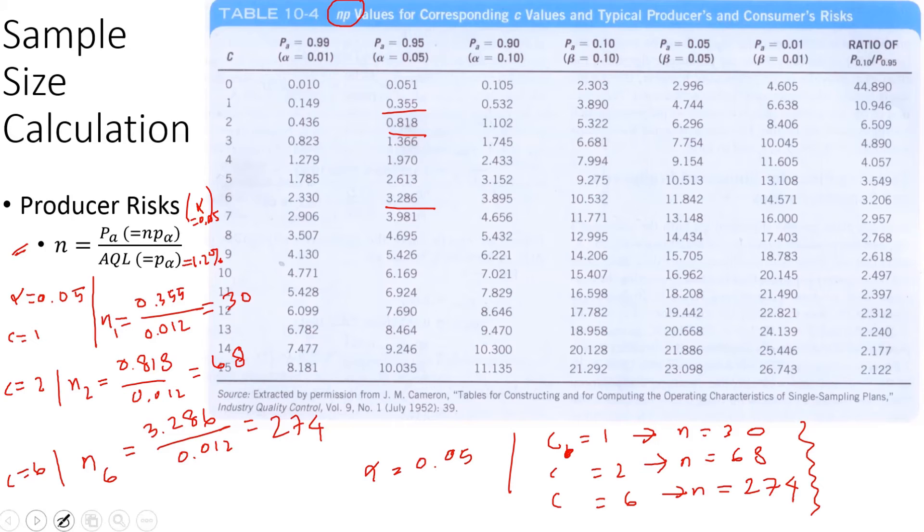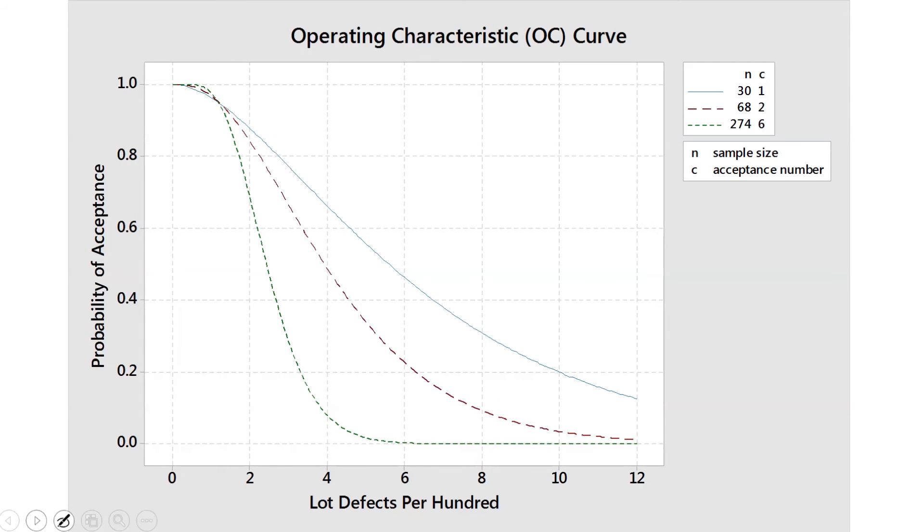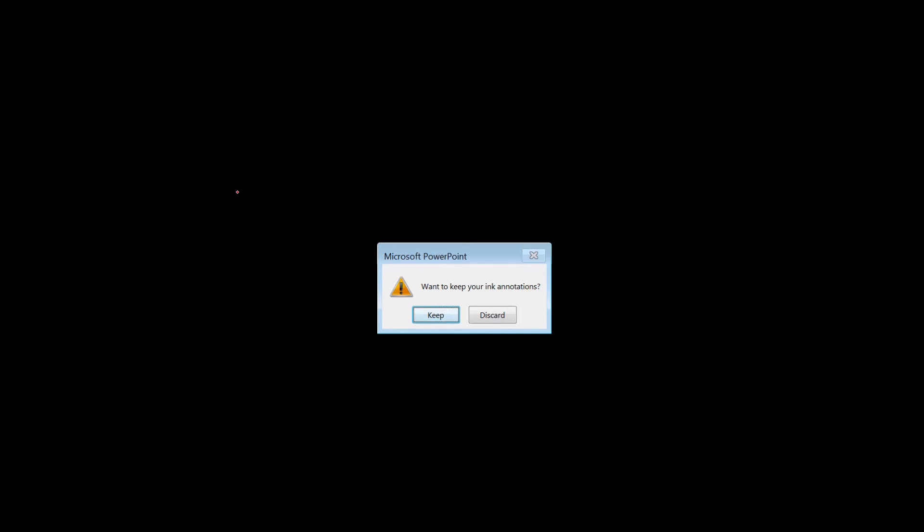So if I plot that in a graph, this is how it looks like. So this is the line that the AQL, that's AQL, say 0.012. So that's the value of AQL.